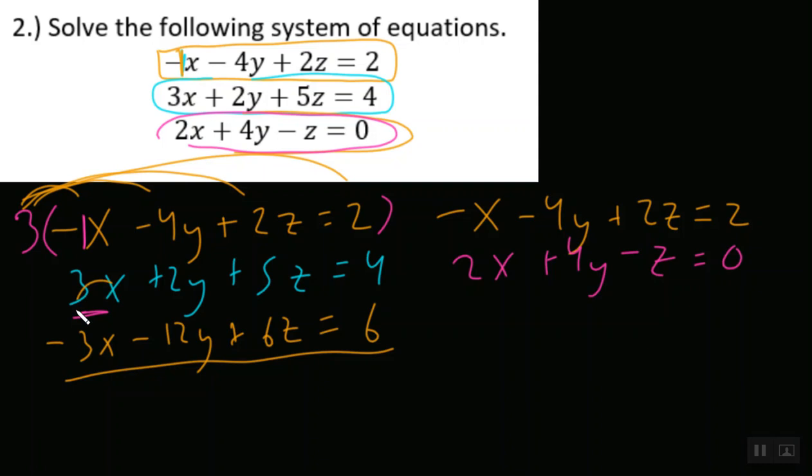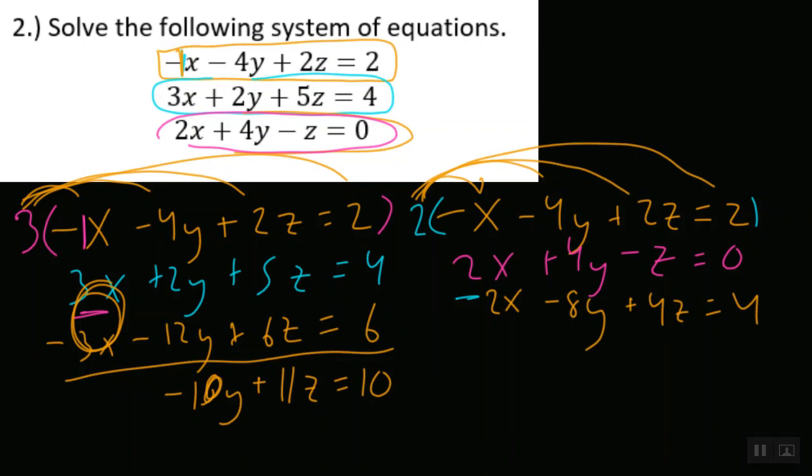Now what happened here? Well, my x is eliminated, 3x minus 3x is 0. And 2y minus 12y will give us negative 10y, plus 5 plus 6 will give us 11z is equal to 10. And over here on the right side, we know that in order to cancel out a positive 2x, we need to have a negative 2x. So let's multiply this top line by 2. And 2 times negative x will give us negative 2x. 2 times negative 4y will give us negative 8y. 2 times 2z will, of course, give us 4z. And 2 times 2 will give us 4. Well, what happens whenever things eliminate? I know 2x minus 2x is a zero pair. And let's see, 4y minus 8y will, of course, give us negative 4y. And negative z plus 4z will give us 3z is equal to 4.